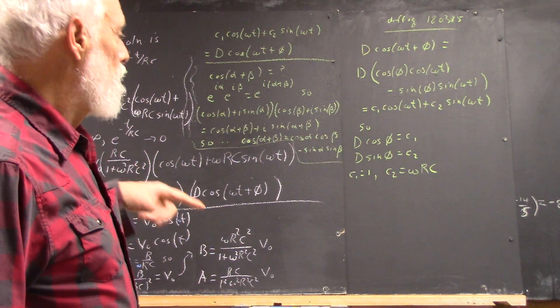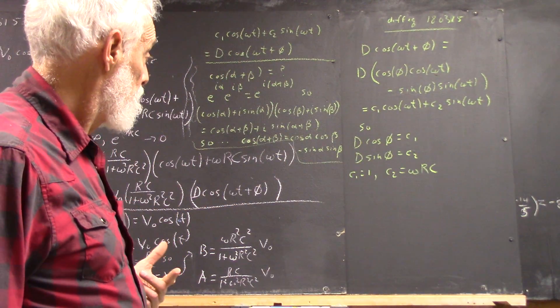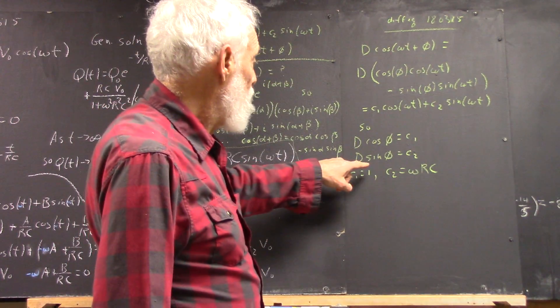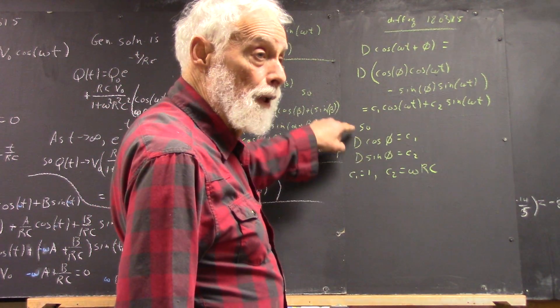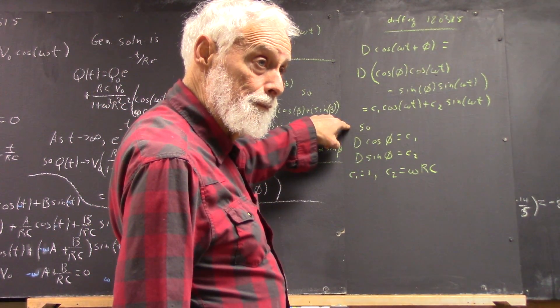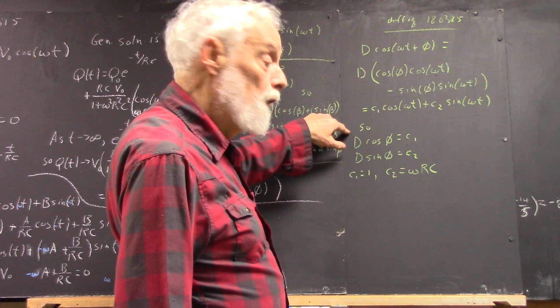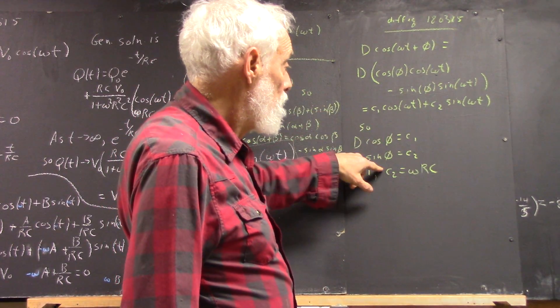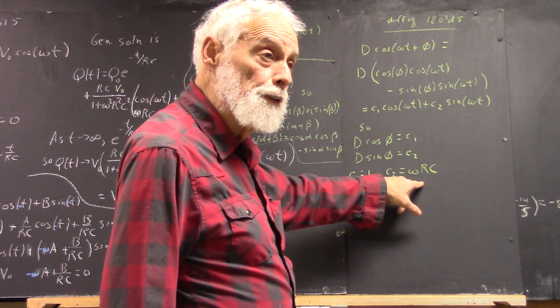Now how do you solve this? Well, I would divide this by this, and these go away. And you get tangent of phi equals omega RC.